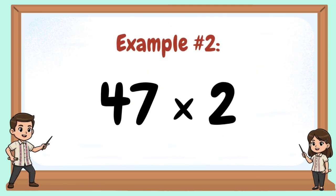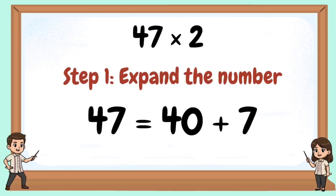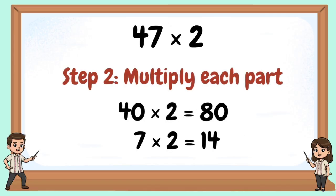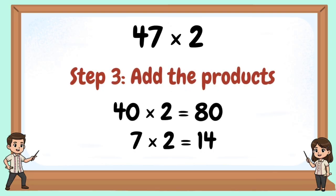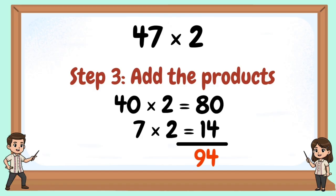Example number 2: 47 times 2. Step 1 — Expand the number: 47 equals 40 plus 7. Step 2 — Multiply each part: 40 times 2 equals 80, 7 times 2 equals 14. Step 3 — Add the products: 80 plus 14 equals 94.